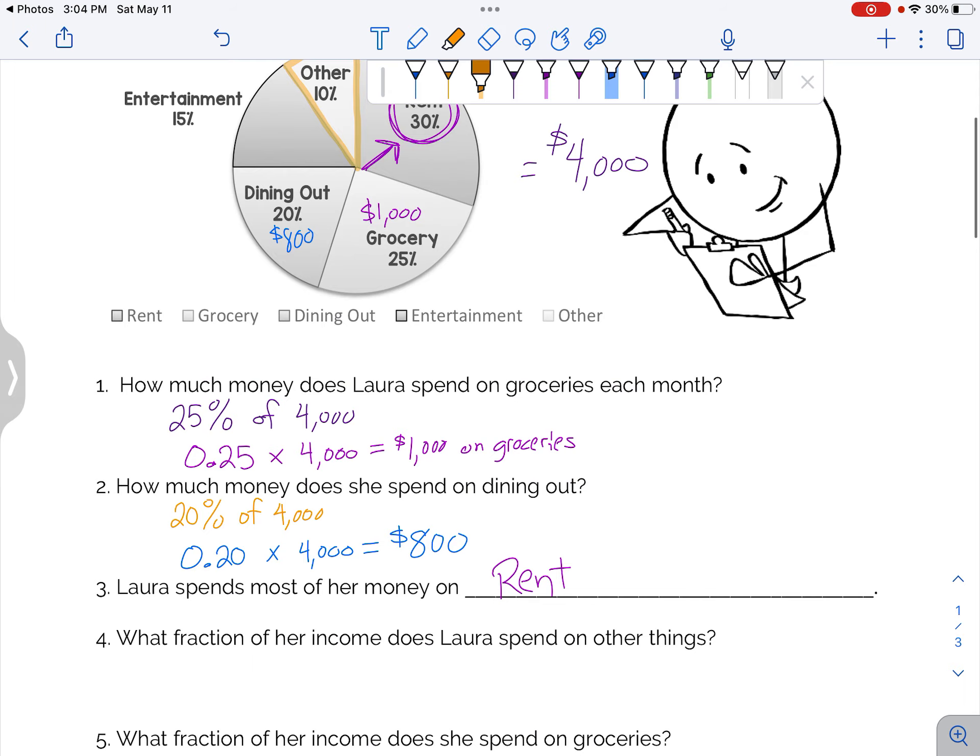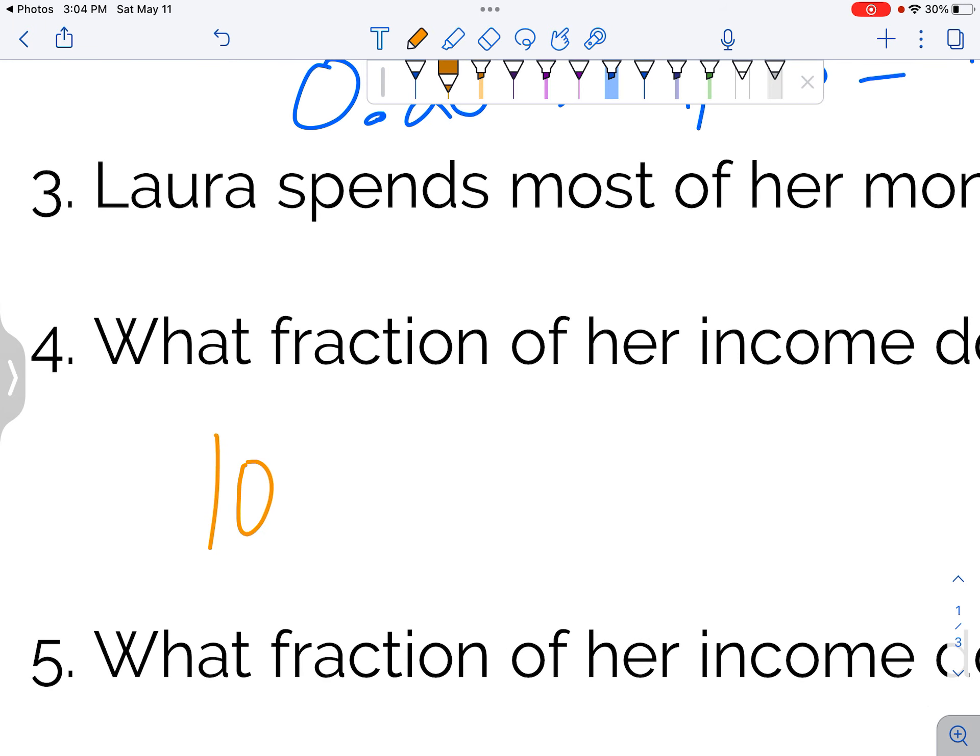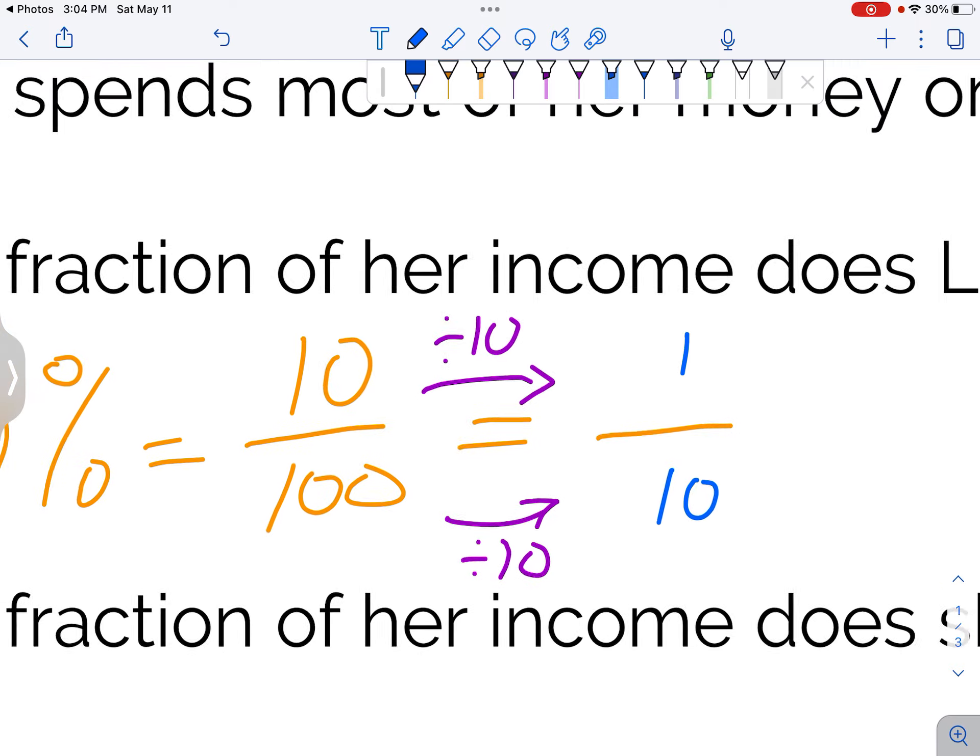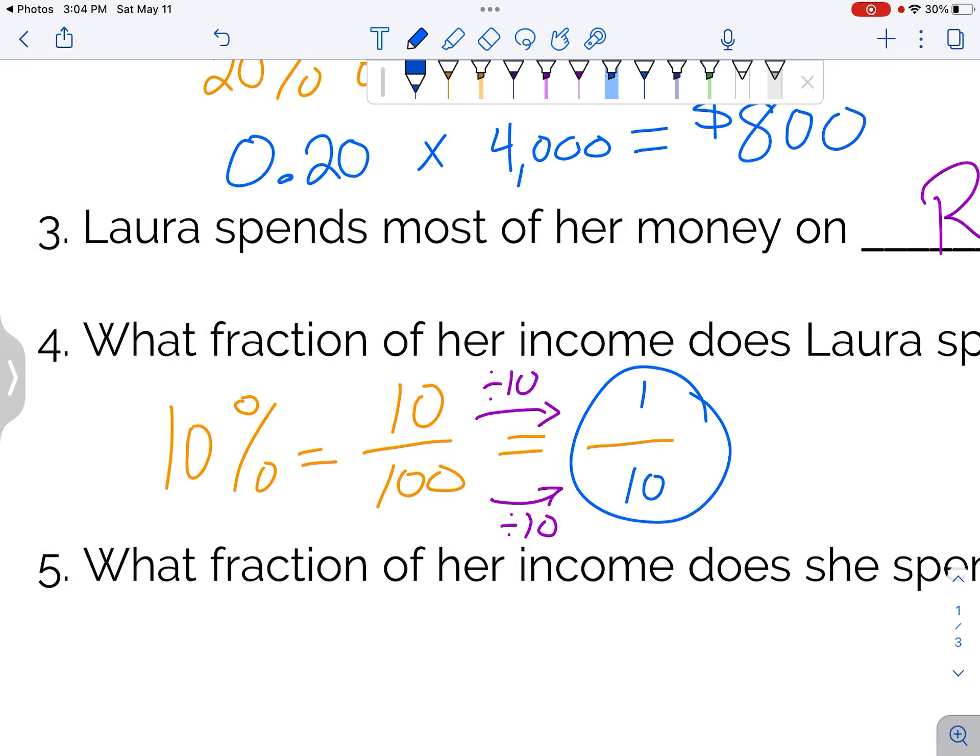So 10% equals 10 over 100. And you know that we need to simplify. So the common factor, the greatest common factor is 10. 10 divided by 10 is 1. 100 divided by 10 is 10. So she spends one-tenth of her income.